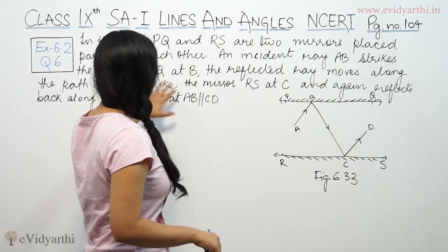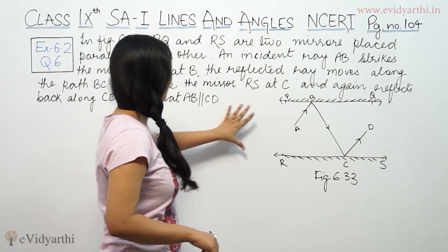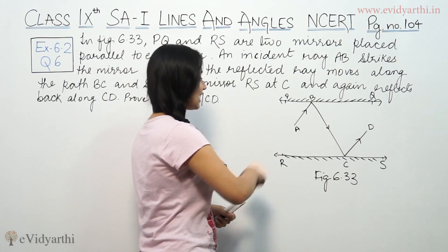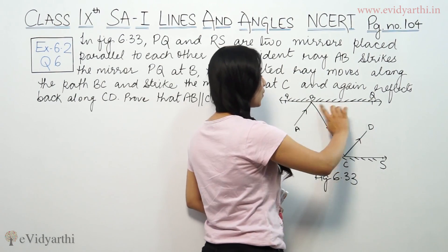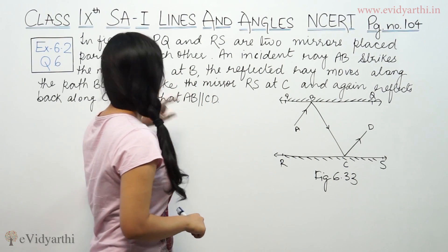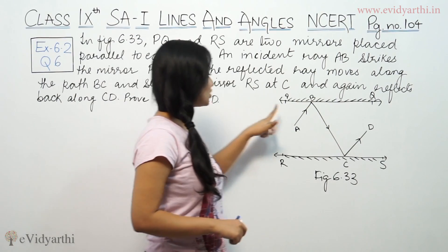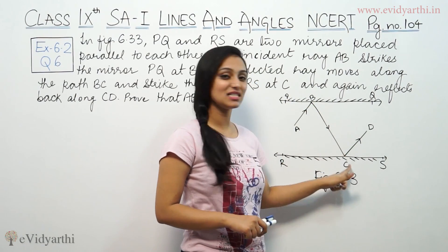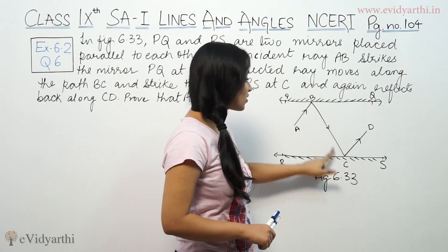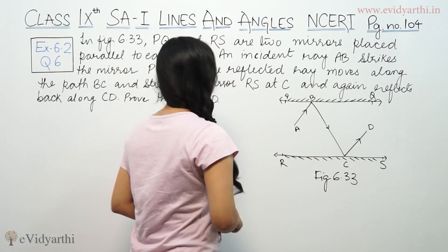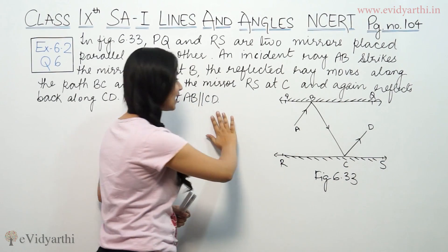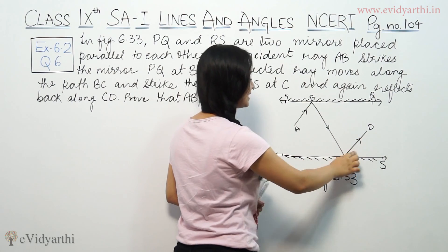The mirrors are parallel to each other. Incident ray AB strikes mirror PQ at B. The reflected ray moves along path BC and strikes mirror RL at C, and again reflects along CD. We need to prove that AB is parallel to CD.